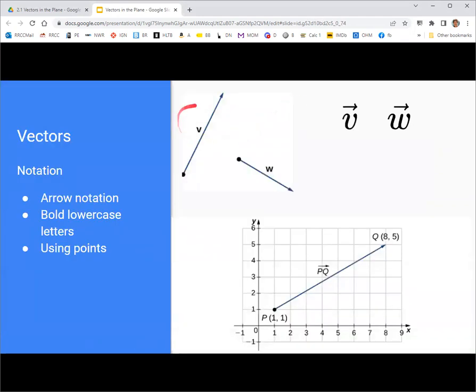Now, we can represent them as arrows, and you'll see that lowercase letters of the alphabet are often used to represent the different vectors. V and W, especially, are popular choices. Some textbooks will just use a bold font on the letter to represent it. Of course, when you're writing by hand, bold font is sometimes hard to get across. And so you'll sometimes see, in handwritten notation, a little arrow on top, indicating that it's a vector.